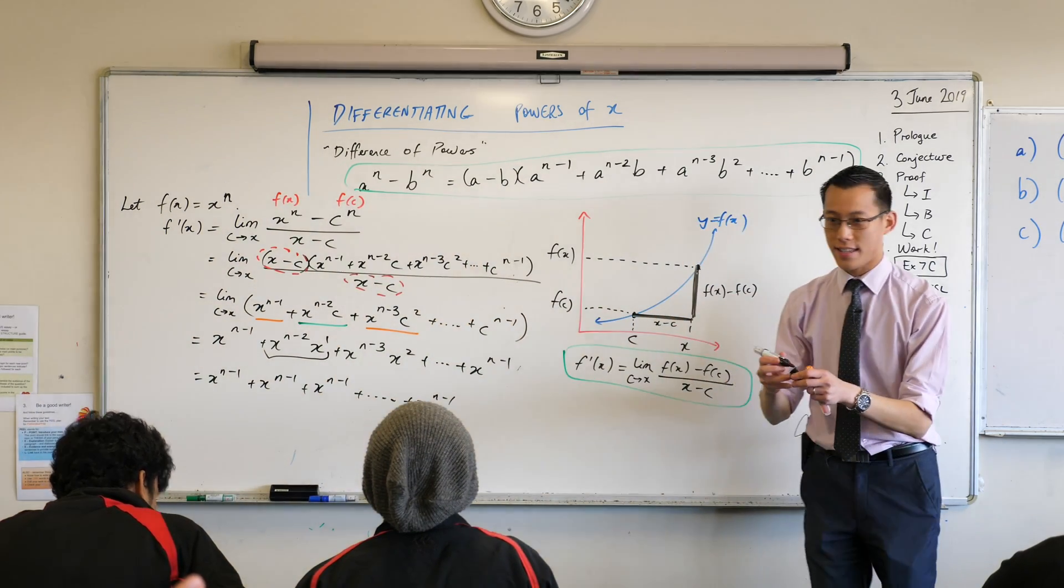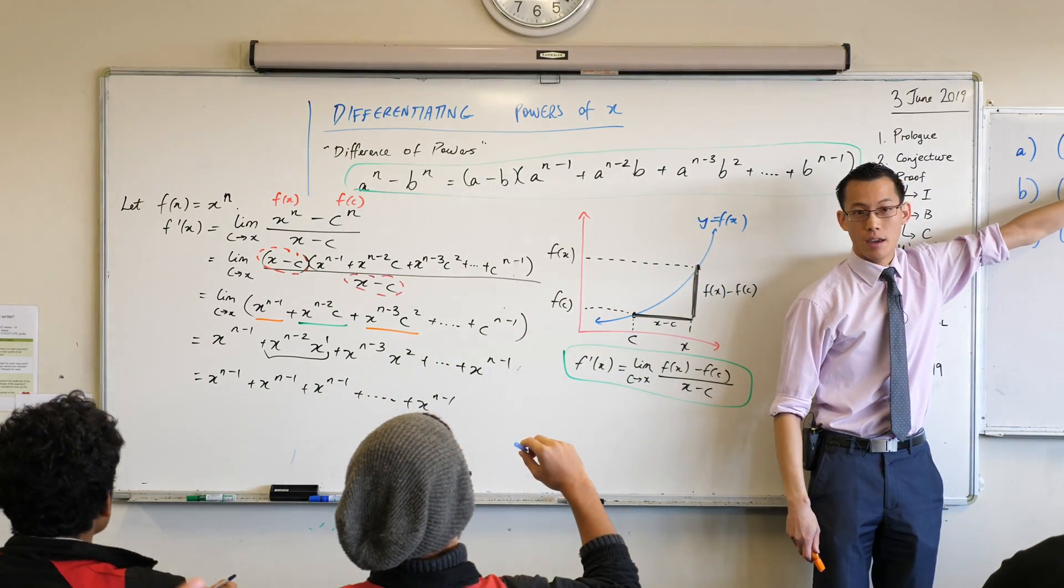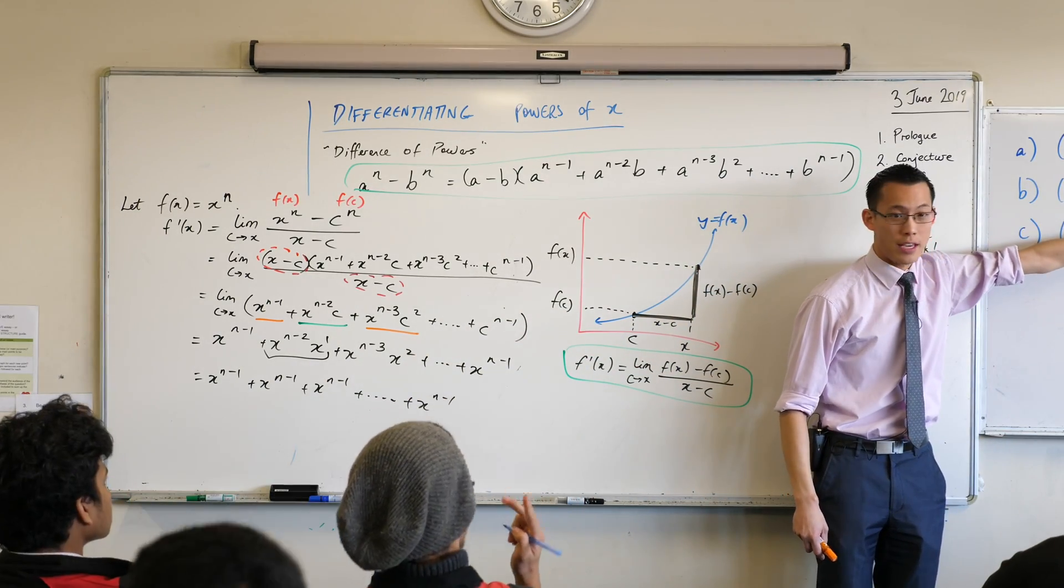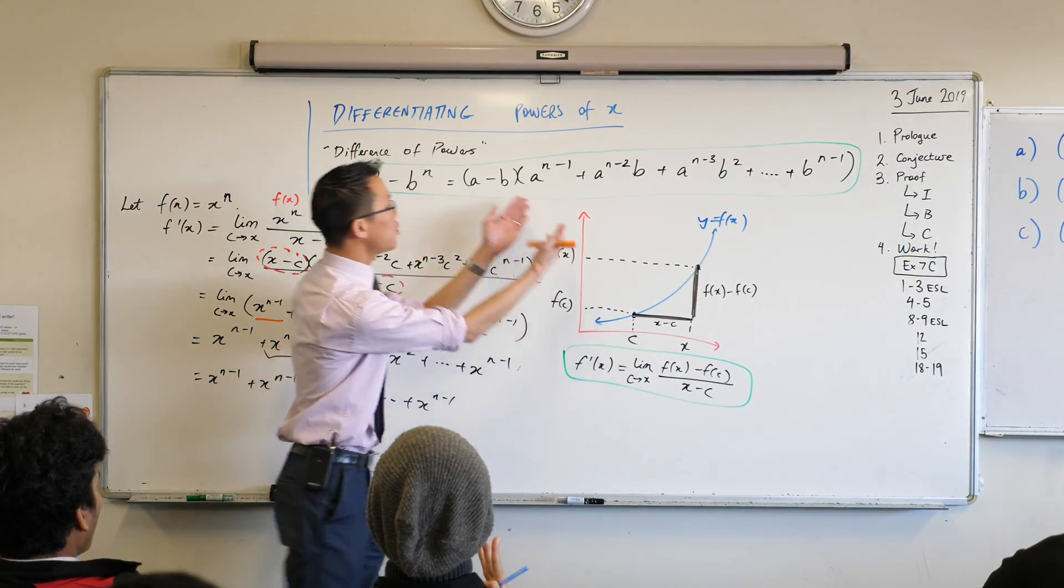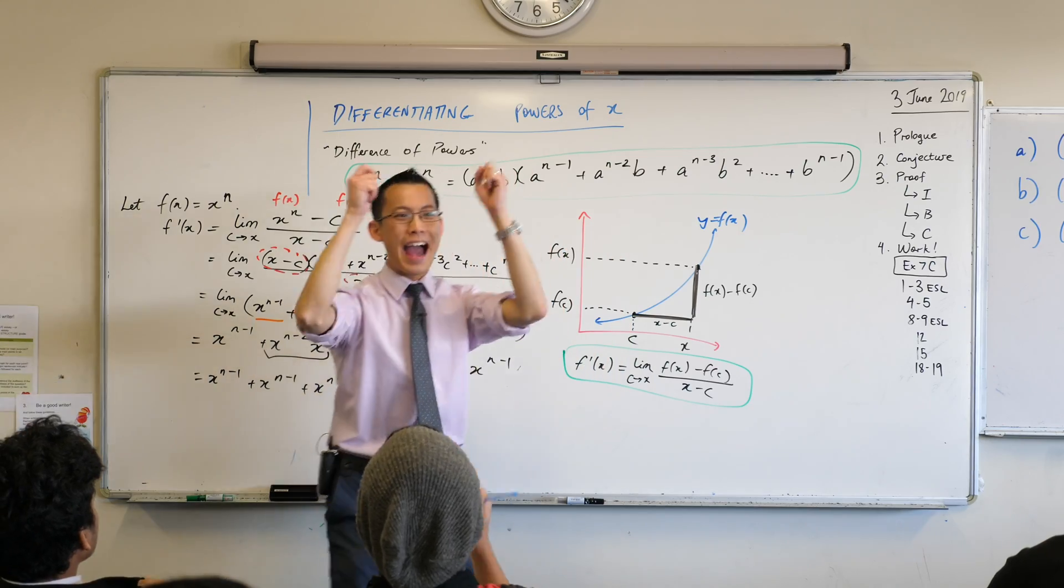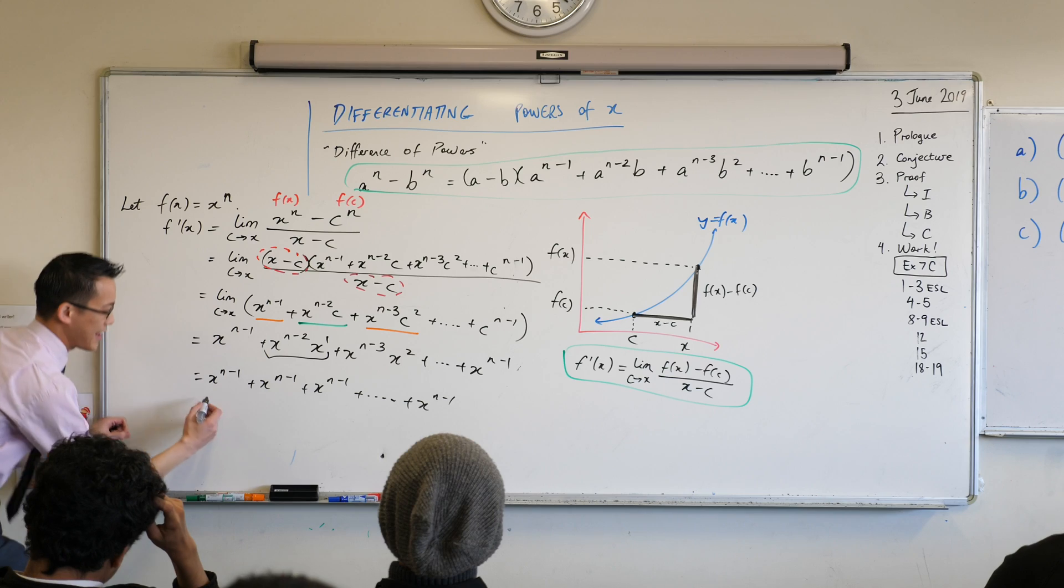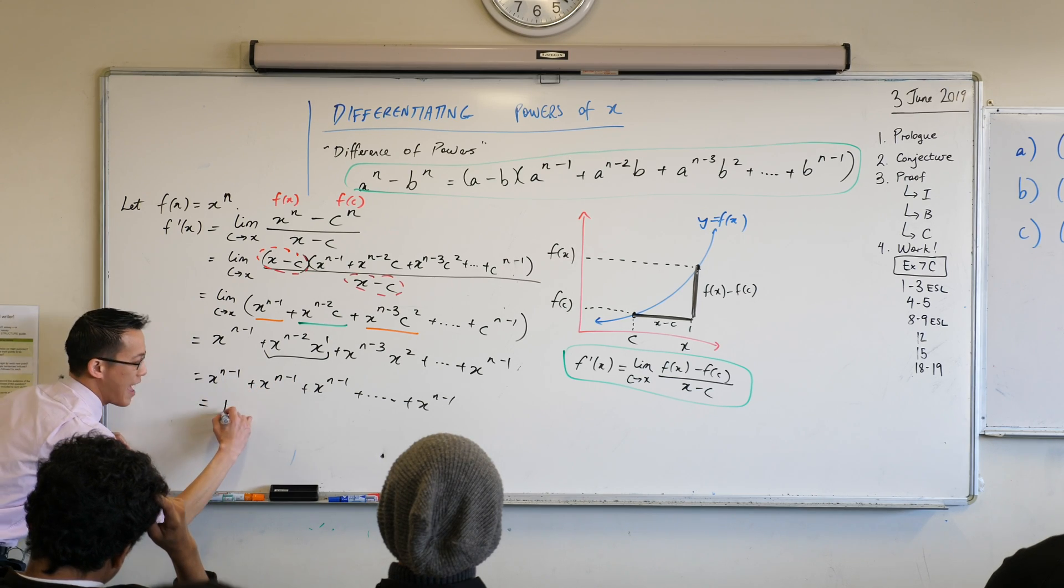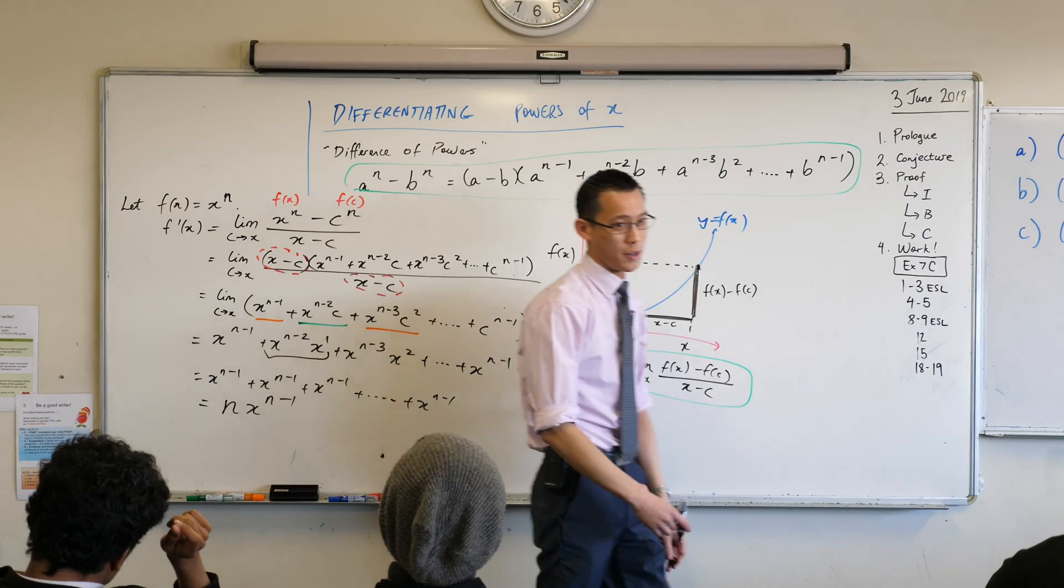And your last term is this. Now this is the last important question. Right? How many of these things do I have? Now hold that thought. How many did I have here? I had 2. How many did I have here? I had 3. How many did I have here? 4. How many do I have here? I have n of them. I have n of these things. So therefore, my final line is, how many of these things do I have? n of them times x to the n minus 1. Yikers.